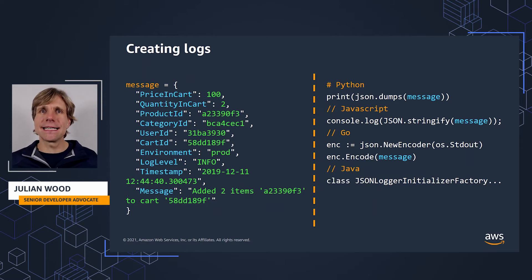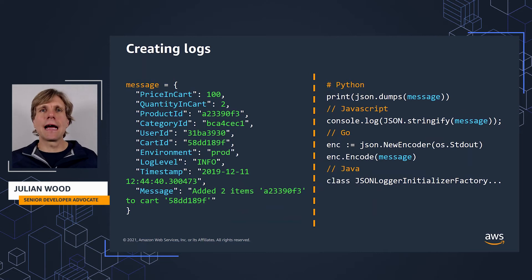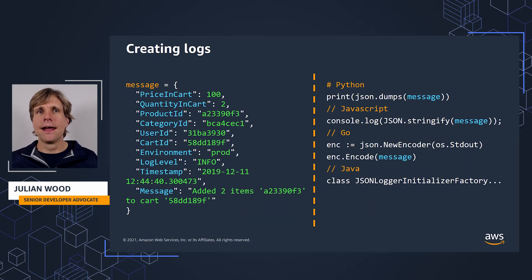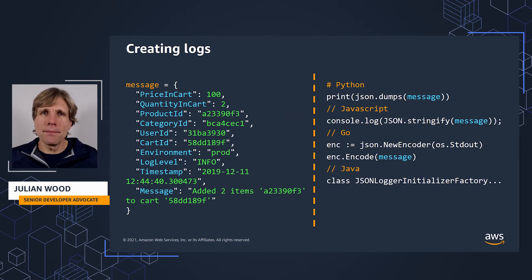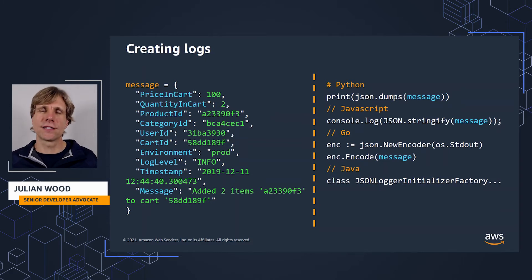Taking a deeper look at basic structured logging, here's a standard message format which may be part of an event your Lambda function is processing in your application. This has a number of fields, and you can do the language equivalent with console.log in JavaScript or print in Python to send this message to CloudWatch Logs. This does give some basic logging information, but it appears as a text line in the logs, which makes it difficult to correlate, and you often have to build complicated systems to then extract real metrics from the logs.